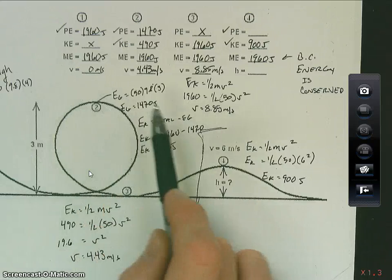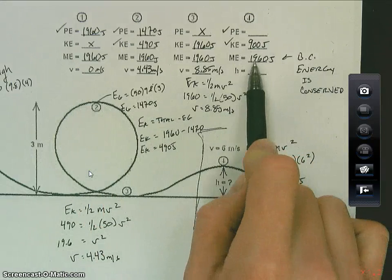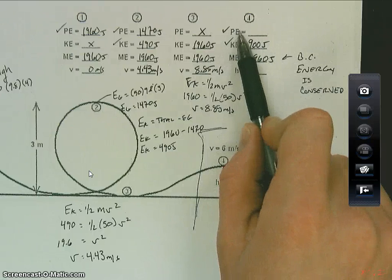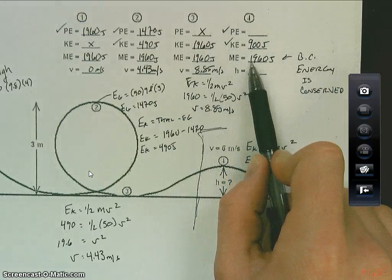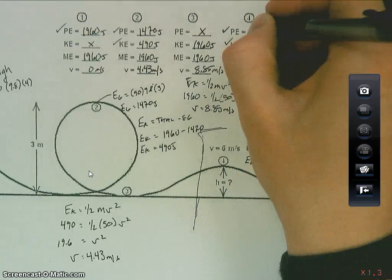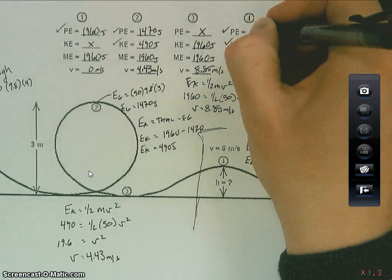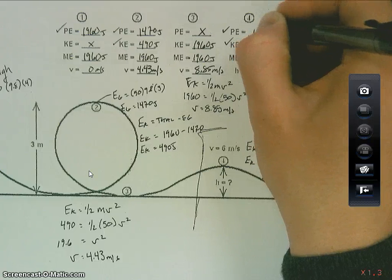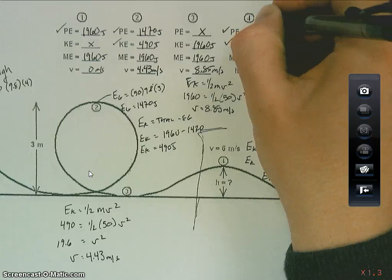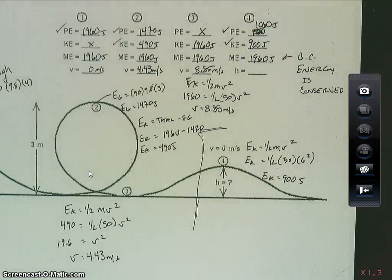And just like we did over here, we know that this total energy is equal to my potential plus my kinetic. So if I want to find my potential out I just take this total, subtract it by that 900, and I get 1060 joules. That's what's left over.